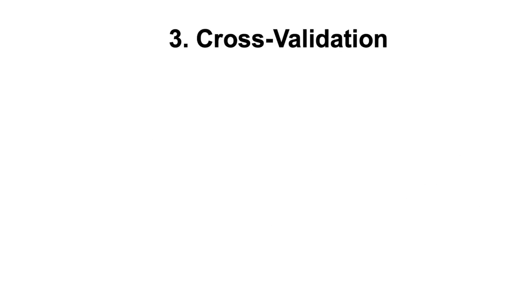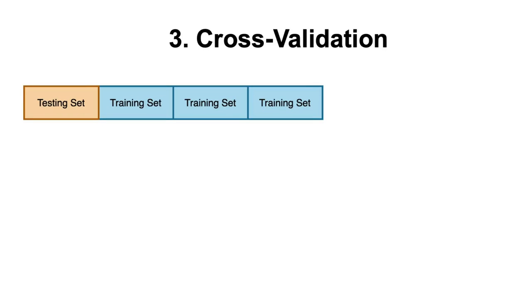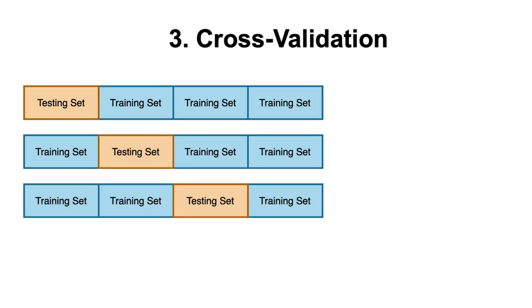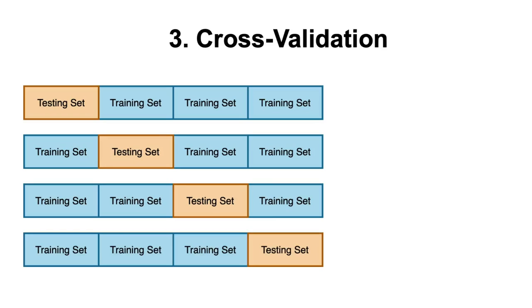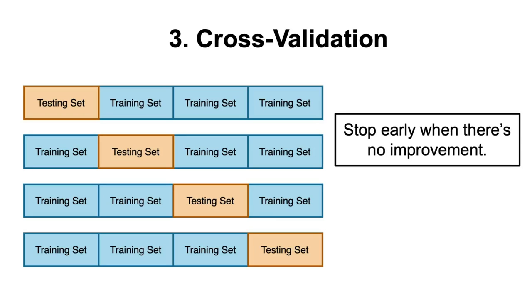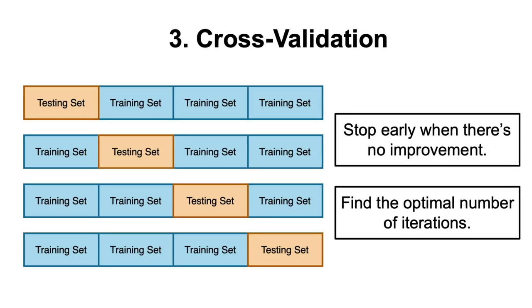It has built-in cross-validation capabilities, allowing you to perform cross-validation without the need for external libraries. This capability allows you to stop the training early when you no longer see any benefits, or it can also help you find the optimal number of iterations by looking at the model performance as it's training, and see at what point it should be stopped.